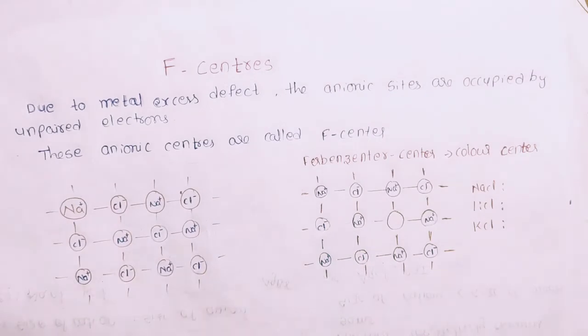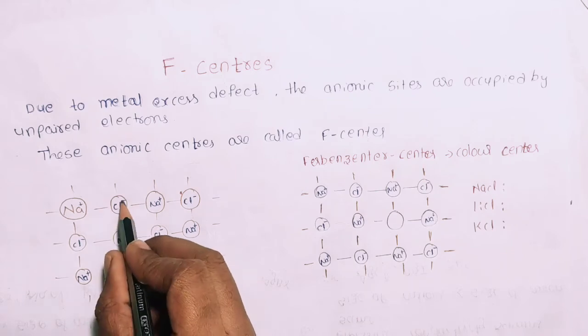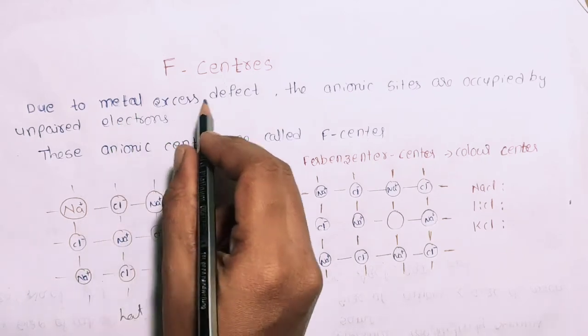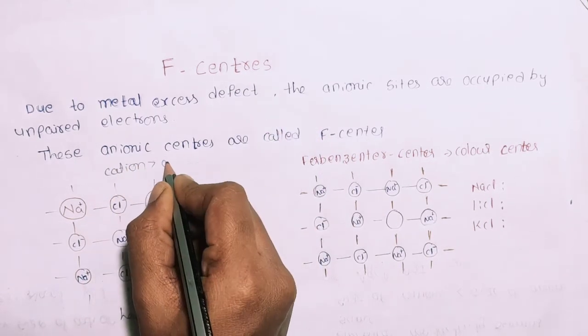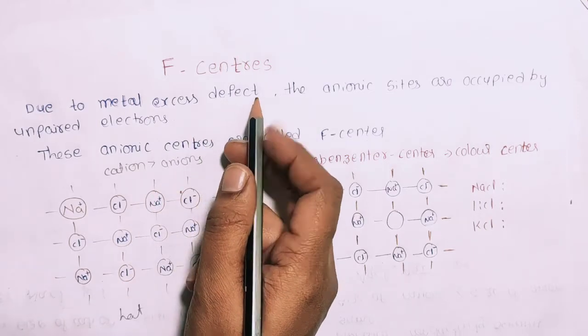For example, NaCl. Here you can heat the NaCl. You can remove it. If you remove it, then you have metal excess defect. That means cation greater than anions, and metal excess defect.